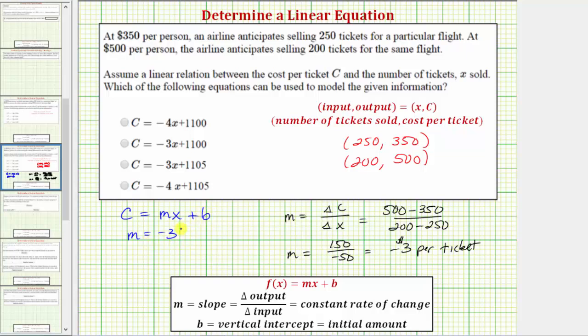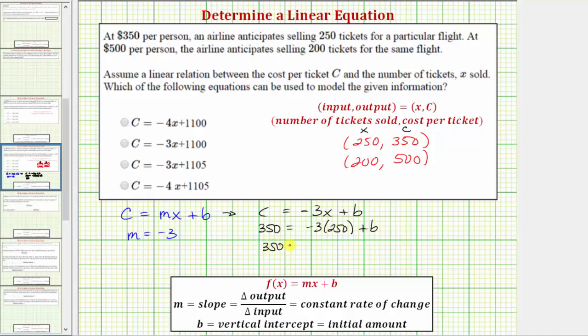The next step is to find B, then we'll have our linear equation. To determine the value of B, we'll use one of these ordered pairs, perform substitution for X and C, and then solve for B. Because we know that M equals negative three, we now know C is equal to negative three X plus B. Let's use this first ordered pair. We'll substitute 250 for X and 350 for C. So we'd have 350 equals negative three times 250 plus B. 350 is equal to negative 750 plus B. Adding 750 to both sides of the equation, we get B equals 350 plus 750, which is 1,100.